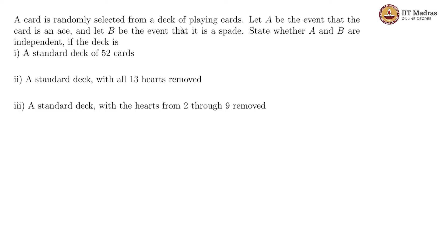A card is randomly selected from a deck of playing cards. Let A be the event that this card is an ace and let B be the event that this card is a spade. If the card is a spade then B is true, and if the card is an ace then A is true. Both are true when it is the ace of spades.